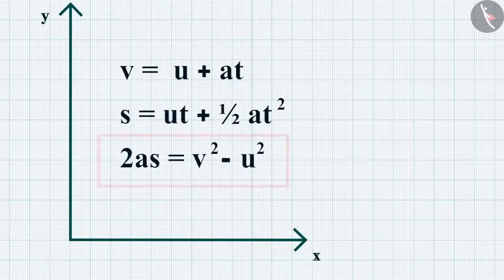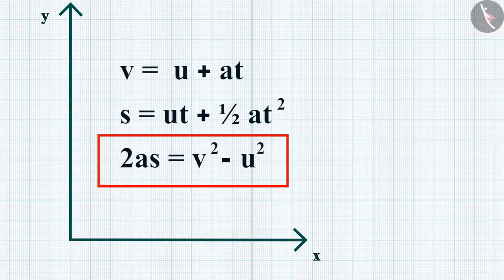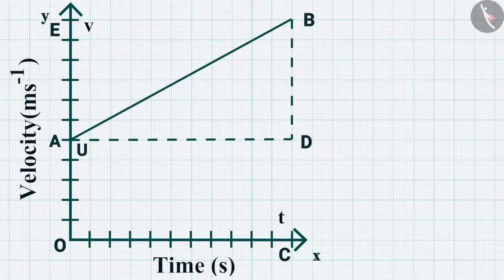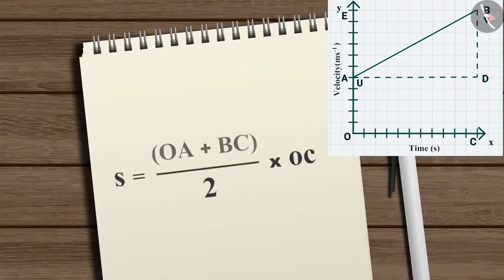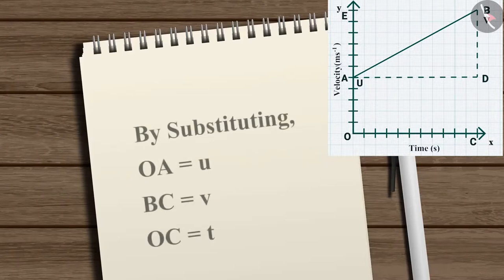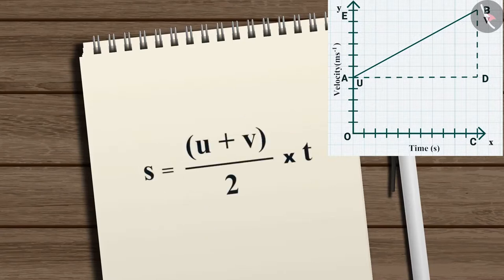Now let us move to the third equation — the equation for position-velocity relation. From the velocity-time graph, distance s equals the area of trapezium OABC. Applying the formula for area of a trapezium, s = (OA + BC) / 2 × OC. Substituting OA = u, BC = v, and OC = t, we get s = (u + v) / 2 × t.